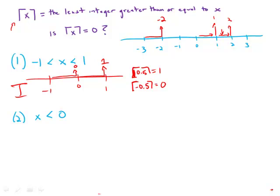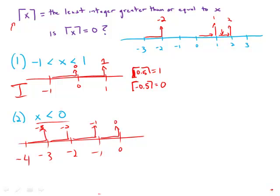Now look at statement two alone, completely ignoring statement one. Statement two says x is less than zero. We have a whole lot of real estate to contend with. Between negative one and zero, it rounds to zero. Between negative two and negative one, it goes to negative one, and so forth. There's an infinite number of values ceiling of x could take. This statement is wildly insufficient.